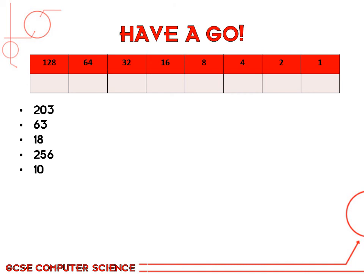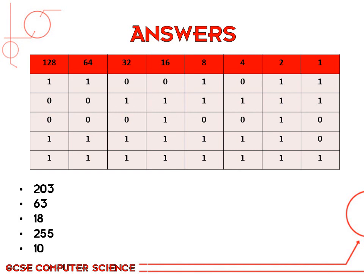Remember: put a 1 in the biggest number that will go into your number, then subtract it and repeat the steps. When you're finished, put a 0 in all of the empty boxes. I've filled in the complete table with all of the answers for those conversions — hopefully these are the ones you got. If not, just go back and have another go.